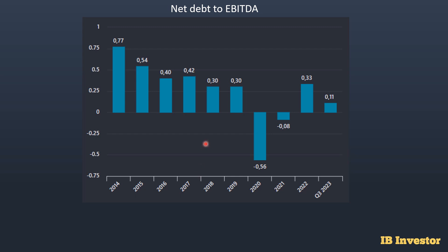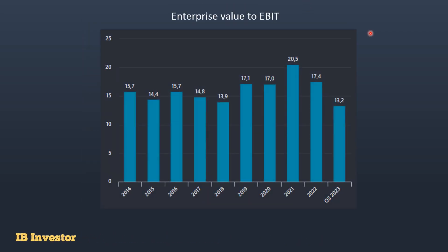Looking at net debt versus cash from operations, nothing looks alarming. The company has some net debt currently, but in 2020 and 2021 they actually had net cash. Cash from operations covers the debt very comfortably, meaning the company could make acquisitions or invest significantly without the numbers looking bad. The net debt to EBITDA multiple currently sits at just 0.11 times — historically it's been pretty low — so management has been quite conservative with debt, which makes this a stable company.